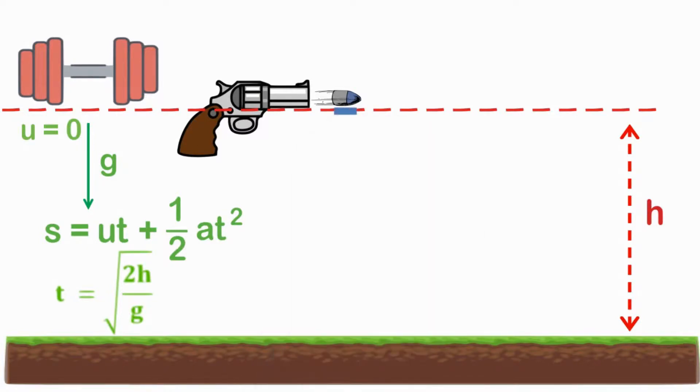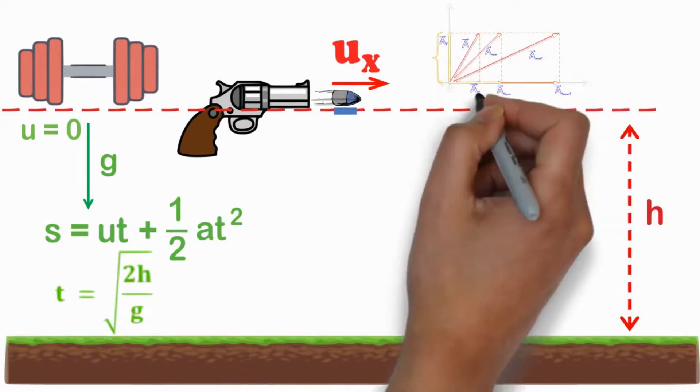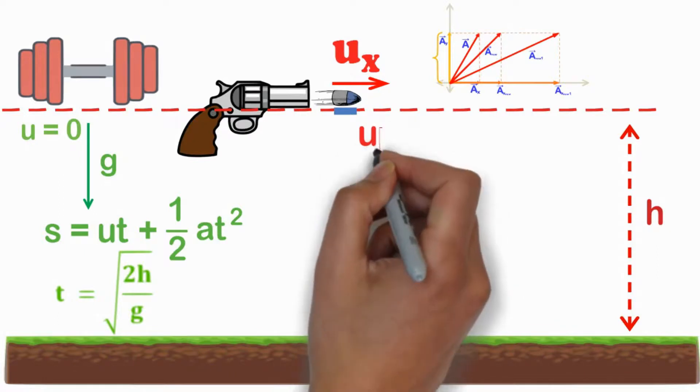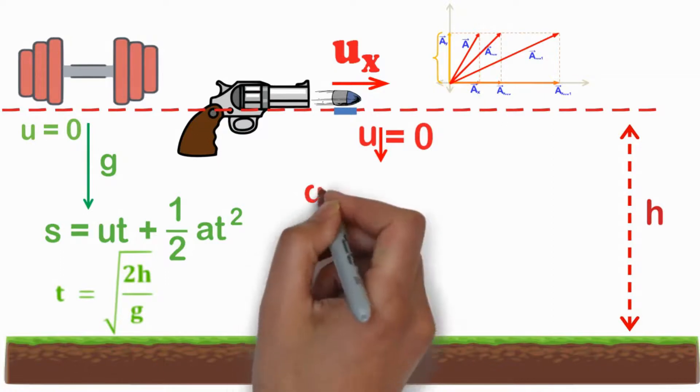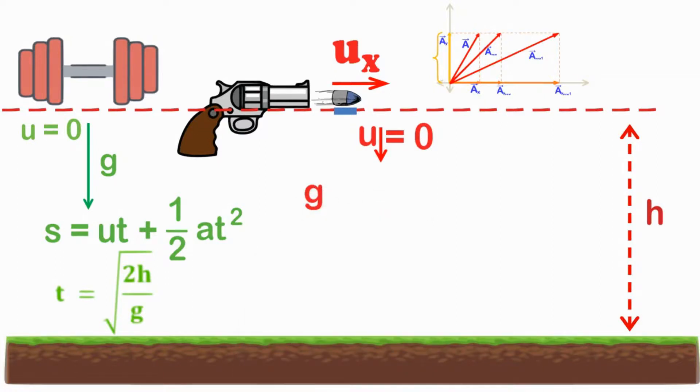Now let us consider the scenario for the bullet. Before firing, the bullet was at rest. As the gun is pointing in the horizontal direction, the bullet will gain horizontal velocity when fired. As we know, perpendicular vectors are independent of each other. Hence, the vertical component of velocity of the bullet remains zero. And as acceleration due to gravity is independent of mass of the object,